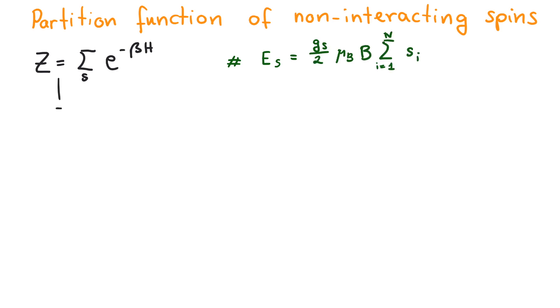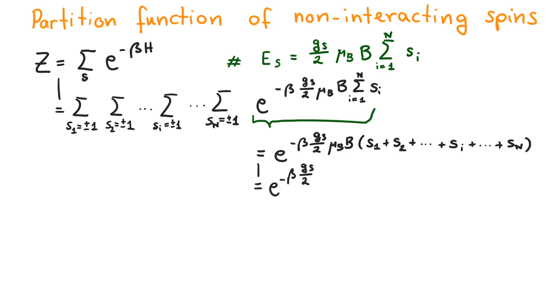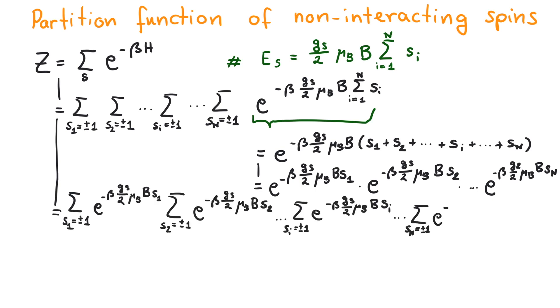Summing over all states means summing over s1 being plus or minus 1 and s2 and so on for all spins. The Boltzmann factor contains the energy of the state. Es can be expanded and finally written as a product.